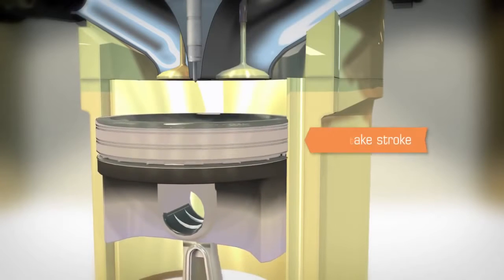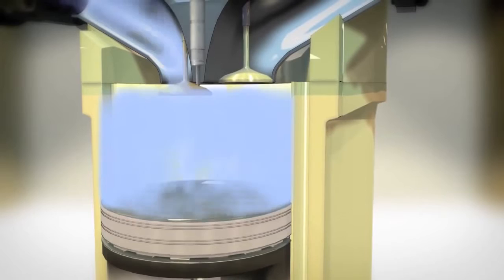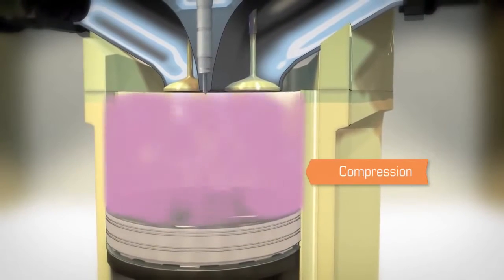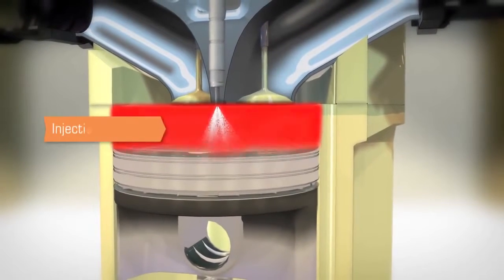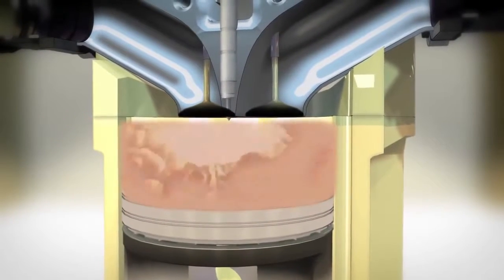During the engine's intake stroke, the intake valve opens, drawing air into the combustion chamber. In the compression stroke, the piston moves up and compresses the air. As the piston nears the top, fuel is injected at just the right moment and is ignited by the high heat and pressure of the compressed air.